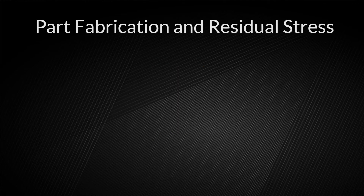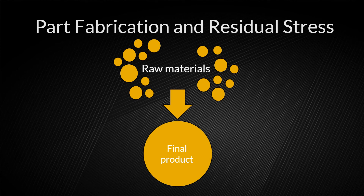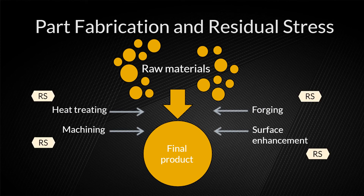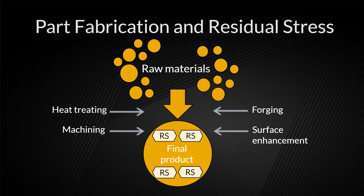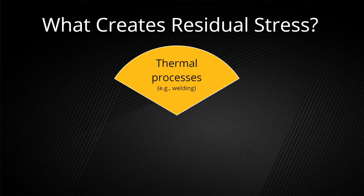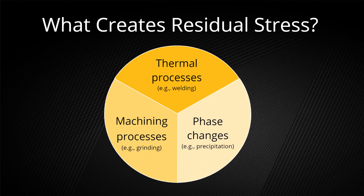How exactly does residual stress affect part fabrication? When the raw materials are manufactured into the final product, there are processes along the way: heat treating, forging, machining, and surface enhancement — and each process adds residual stress to the final product. There are three main ways in which these processes can create residual stress: thermal processes such as solidification of a material in a cooling casting; machining processes such as plasticification of a material during machining; and phase changes such as precipitation or phase transformation resulting in a volume change.